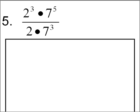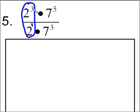In problem number five, we are dividing exponents. When we divide exponents with like bases, we subtract their powers. So let's go ahead and look at number five. The nice thing about problem number five is that the like bases are on top of each other. So let's go ahead and circle those like bases. We have two to the third power over two — that is really two to the first power. And when I take three minus one, I'm going to get two to the second power.